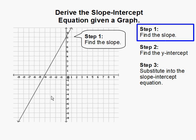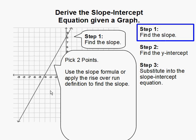Step one, find the slope. To find the slope we pick two points, so I'm going to pick a point here and a point here, and you can use the slope formula or apply the rise over run definition to find the slope.